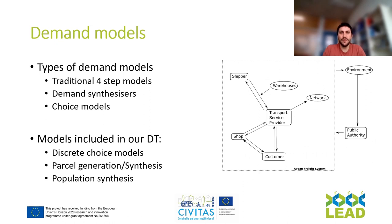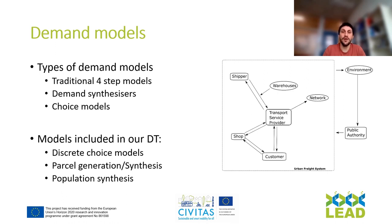The demand models we will discuss study how much and why a certain product or service is being consumed. Traditionally in transport, demand is estimated through the four-step model: trip generation, trip distribution, mode choice, and assignment to the network. However, we can also include demand synthesizers that simulate the people who will demand a certain product or service, and choice models that help us estimate how and why a certain product is consumed. In the LEAD platform digital twin, we include discrete choice models.